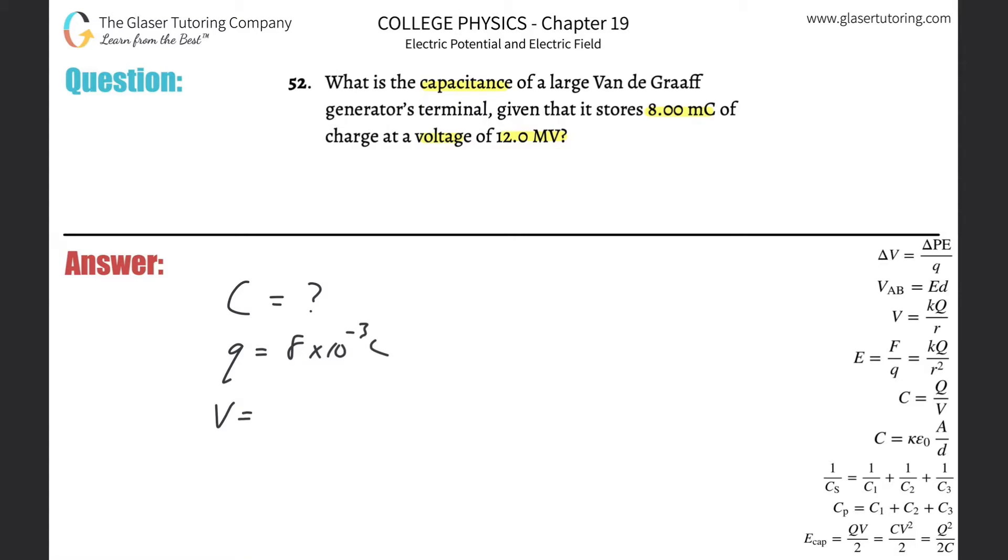Then the voltage. They gave it to us in megavolts. All you got to do then is take that value and multiply by 10 to the positive 6 to get it into volts.